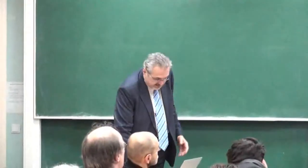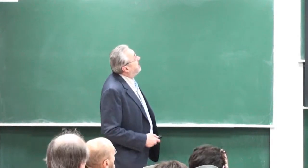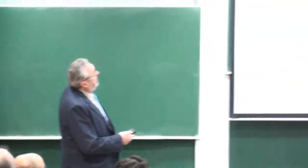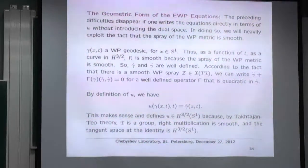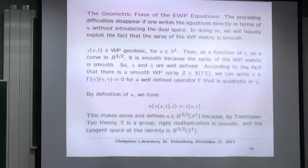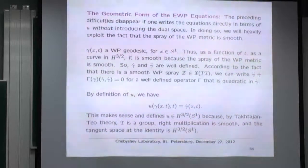The equations must exist, and they do — there is a geometric form of the Euler-Weil-Petersson equation. Take γ(x, t), a Weil-Petersson geodesic for x ∈ S¹ and t time, thought of as a curve in H^{3/2}. It is smooth because the spray is smooth, so γ and γ̈ are well defined. I call this Z and write: γ̈ + Γ(γ̇, γ̇) = 0, where Γ plays the role of Christoffel symbols. By definition, the covariant derivative is a vector field, and this makes sense — in Takhtajan-Teo's theory the group and right multiplication are smooth and the tangent space is H^{3/2}.